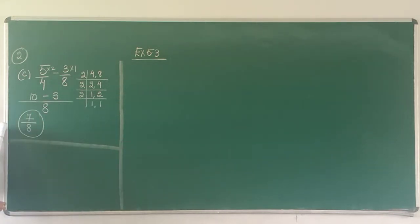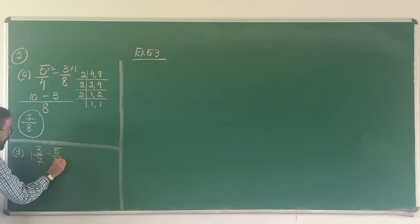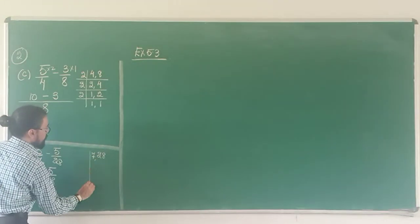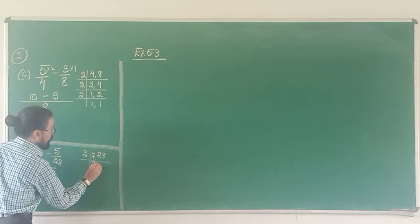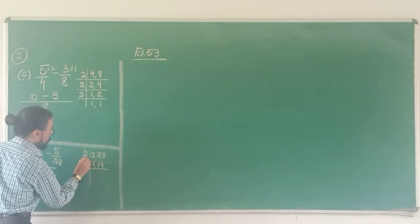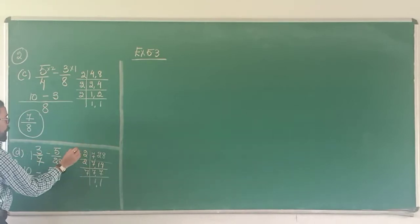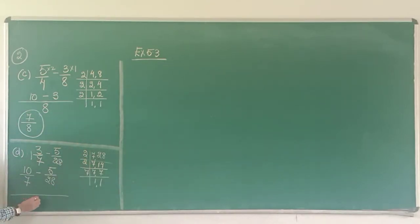Now we move to 2D. So D I have 1 3 upon 7 minus 5 upon 28. First I change this mixed fraction to an improper fraction. So 7 1's 7 and 3, 10 upon 7 minus 5 upon 28 remains as is. I find the LCM of 7 and 28. 28 is divisible by 2. So 2, 7 comes down. 2 1's are 2, 2 4's are 8. Again divisible by 2. 7 comes down. 2 7's are 14. And last 7, 1 1. 2 2's are 4, 4 7's are 28. So my LCM is 28.